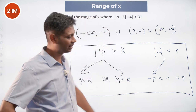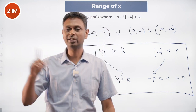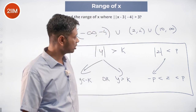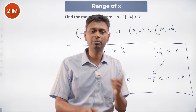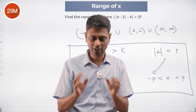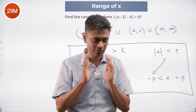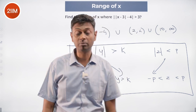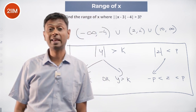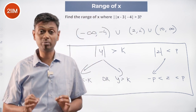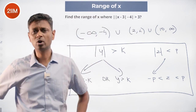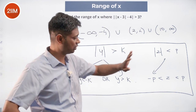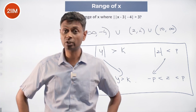For example: mod y greater than 5 means y is greater than 5 or less than minus 5. Mod z less than 3 means z should be between minus 3 and plus 3. Note this down carefully and be very careful when plugging it in. All modulus inequality questions just flow from these two rules — nothing more than that.